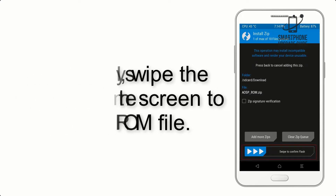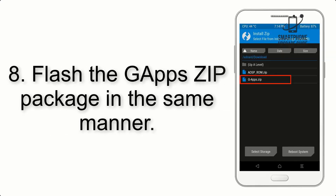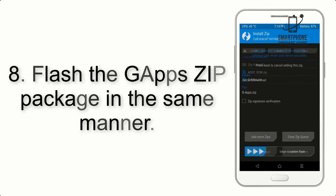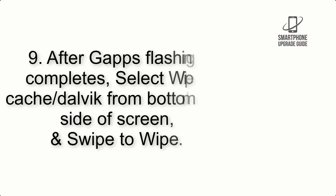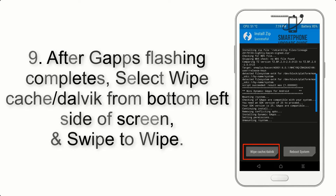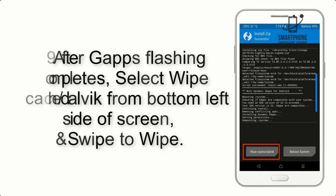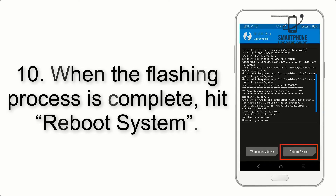Step 7: Swipe the button on the screen to install the ROM file. Step 8: Flash the GApps zip package in the same manner. Step 9: After GApps flashing completes, select Wipe Cache and Dalvik from the bottom left side of the screen and swipe to wipe.